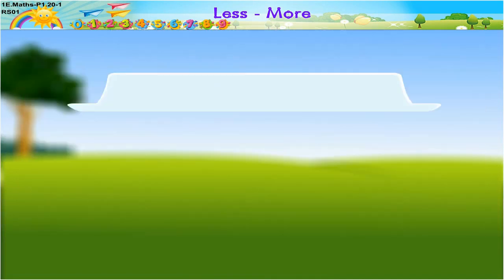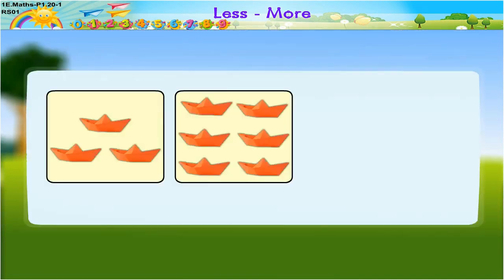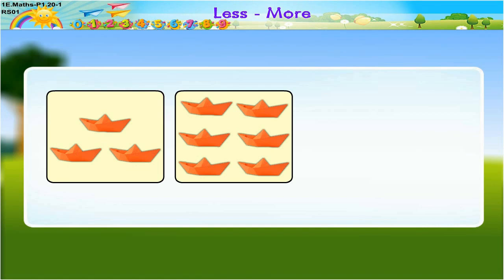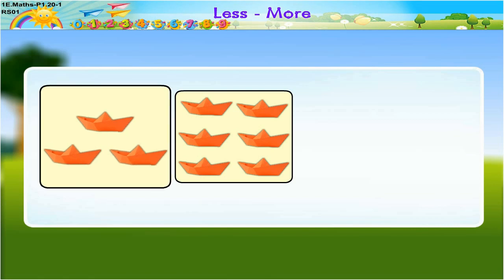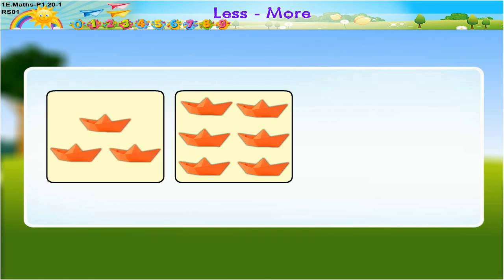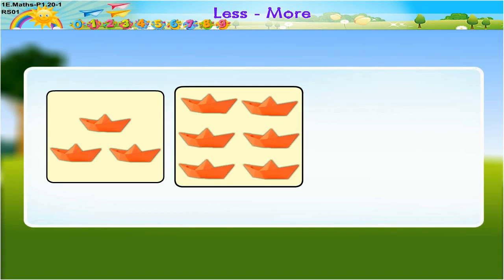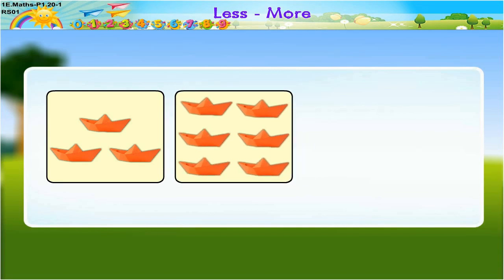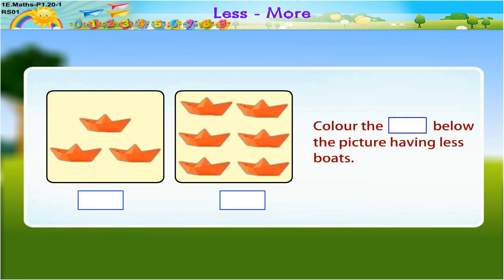Now look at the second pair of pictures. The first picture has less paper boats and the second one has more paper boats. Color the box below the picture having less boats. So what do you have to do?